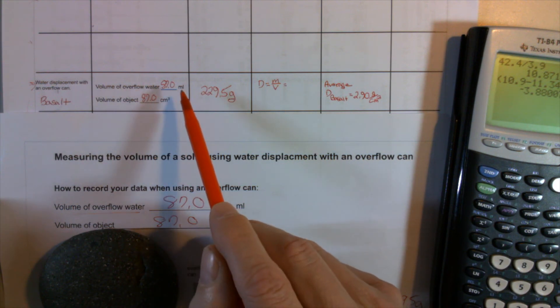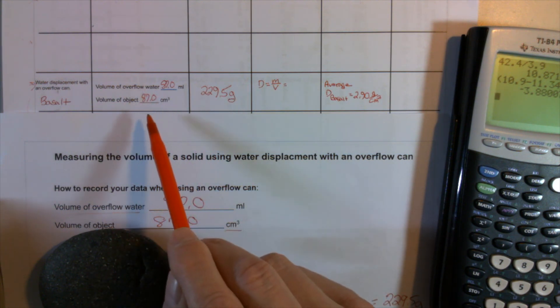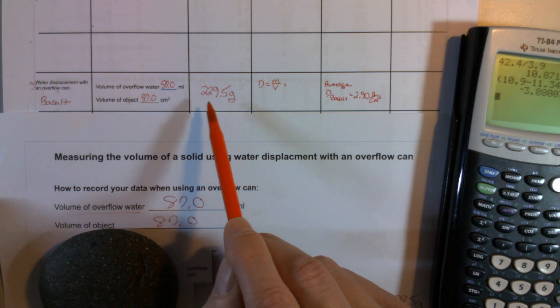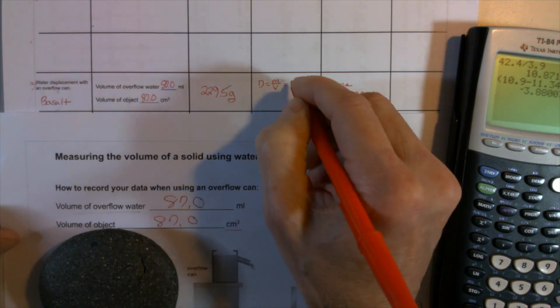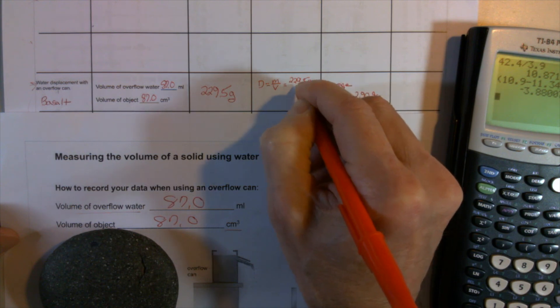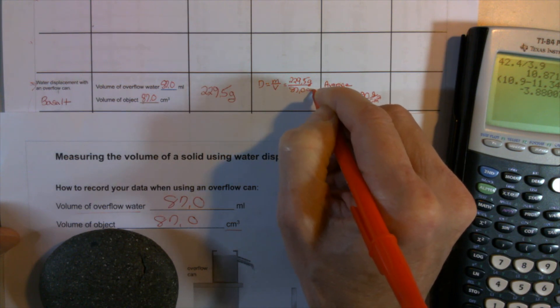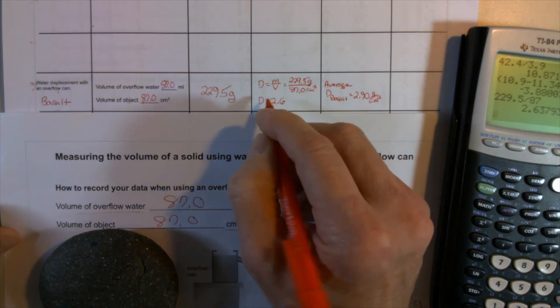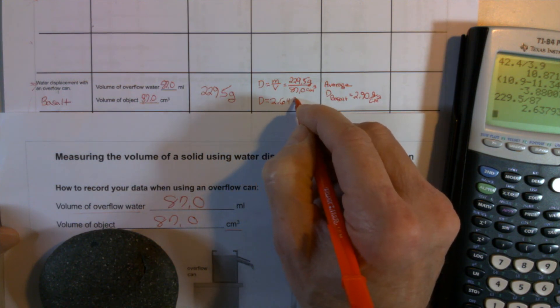I've gone ahead and transferred the data. First, the actual amount of water that flowed out, which was 87.0 milliliters. And then simply change that to 87.0 cubic centimeters. I transferred the mass of 229.5 grams. And now I'll make the calculation. So the mass of 229.5 grams divided by the volume of the object, which is 87.0 cubic centimeters. Then I get a value of density of 2.64 grams per cubic centimeter.